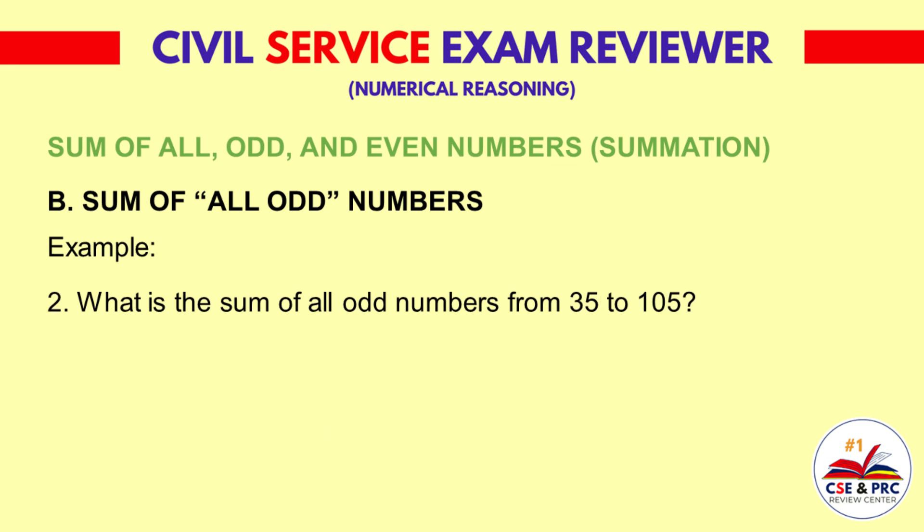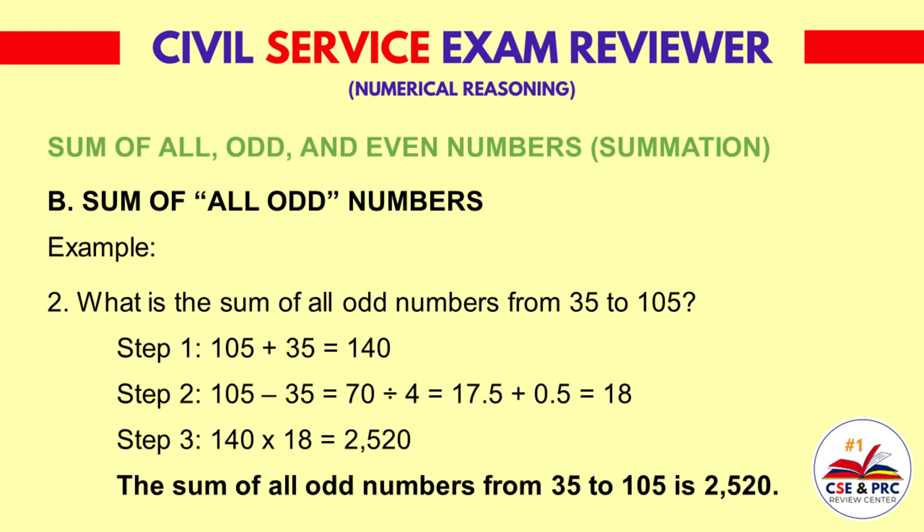Example 2: What is the sum of all odd numbers from 35 to 105? Following the same steps. Step 1: 105 plus 35 is equal to 140. Step 2: 105 minus 35 equals 70, divided by 4 equals 17.5, plus 0.5 equals 18. Step 3: 140 times 18 is equal to 2520. The sum of all odd numbers from 35 to 105 is 2520.